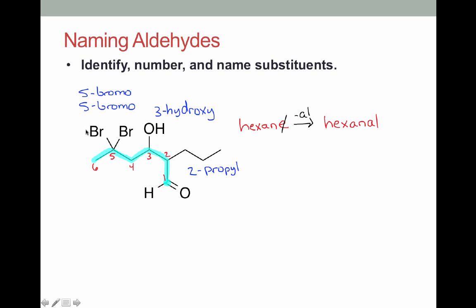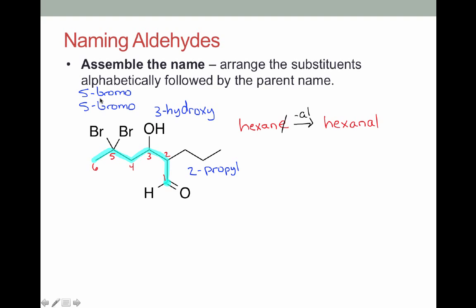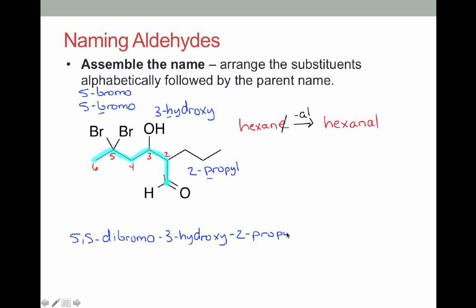Now we need to assemble our name, starting by putting our substituents alphabetically. We're comparing B, H, and P. B comes first alphabetically — we have two bromos, so that's 5,5-dibromo. Next comes H, so we'll do our 3-hydroxy. Next is 2-propyl. And then finally we finish the name with the parent, which is hexanal.